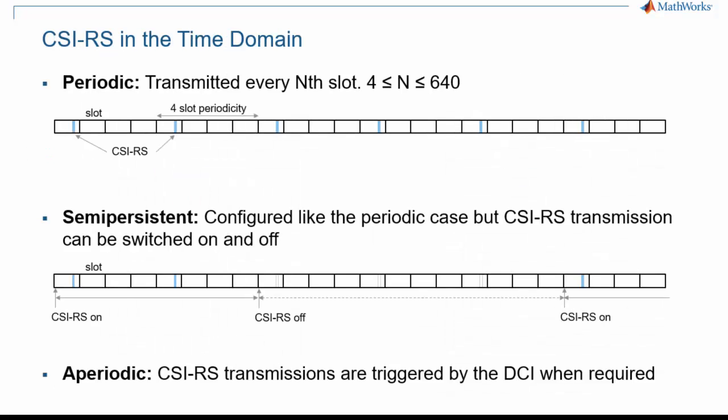CSI-RS occurrences in the time domain can be scheduled in three different ways: periodic, semi-persistent, and aperiodic. Periodic transmission is what it sounds like, and the period is between 4 and 640 slots. Semi-persistent is the same as periodic, but transmission can be momentarily suspended. Aperiodic transmission happens without a predefined schedule. You will have to be notified of such transmission with Downlink Control Information, or DCI, a concept explained in another episode of this 5G Explained series.